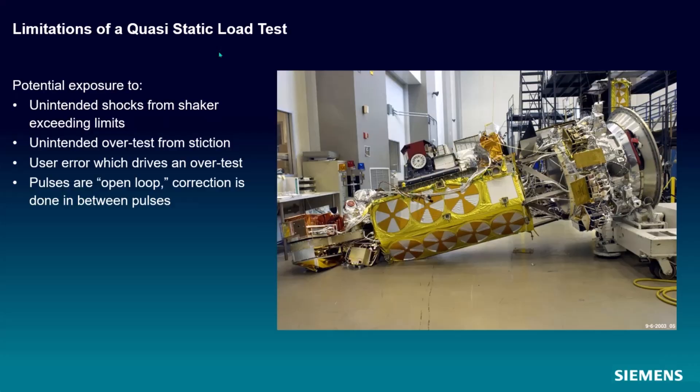There are some limitations to these quasi-static tests and it all is our same risks as testing on a shaker, right? We don't want our satellite to fall over like this, so we want to make sure that we're following all our procedures and stuff. But of course, you have potential exposure to unintended shocks from shakers hitting limits, overtest from stiction in the shaker. That's where perhaps on a horizontal slip table, we have a little bit of extra voltage that we need to just overcome that coefficient of static friction there. And so we have a misidentification of what our transfer function is and therefore a drive voltage, which brings us to this idea here, right? Once you send this pulse out, that's it. You send the pulse and then you see what happens. You cannot correct during the pulse.